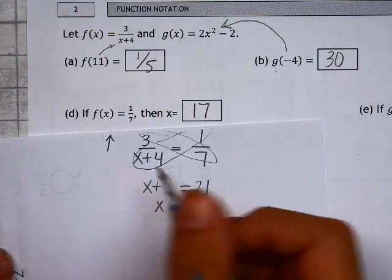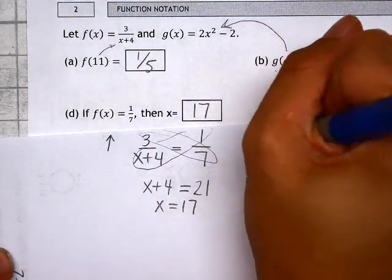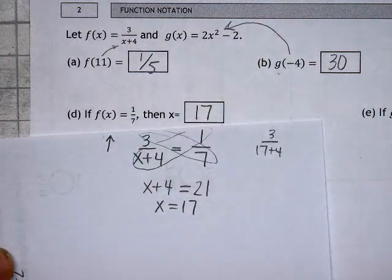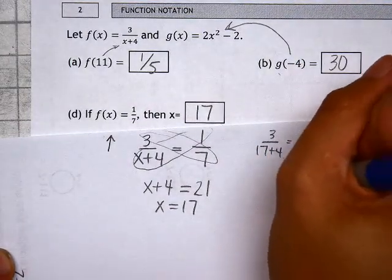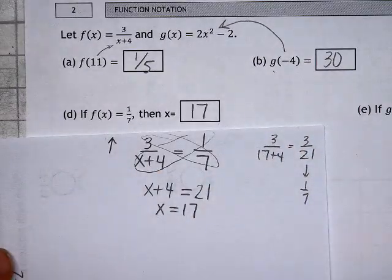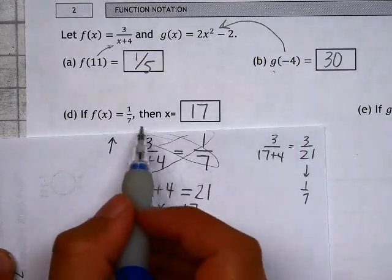You can always plug in just to check. 3 over 17 plus 4, that would be 3 over 21. And sure enough, that reduces to 1 over 7, which was exactly where they wanted us to start.